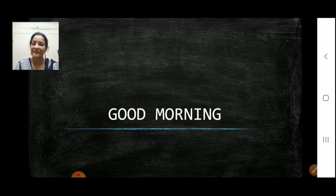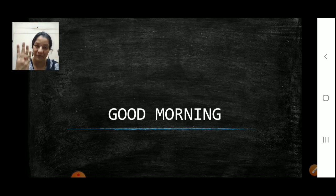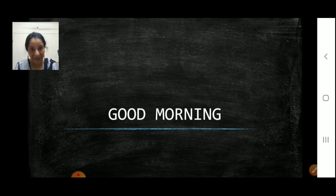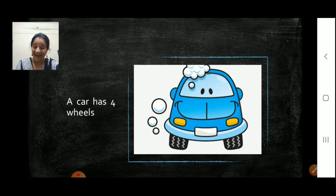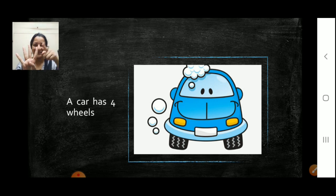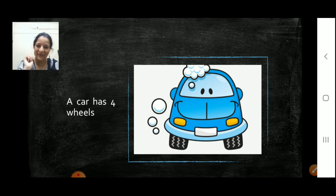Today we are going to do number four. We have already done number one, number two, number three and the next number will be four. Now we already saw that a bus has four wheels. A car also has four wheels, correct? One, two, three and four. How many wheels? Four wheels.